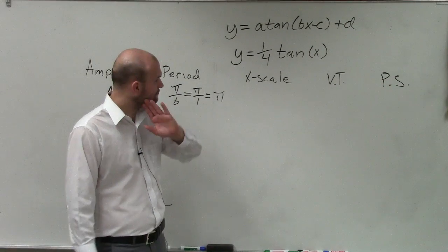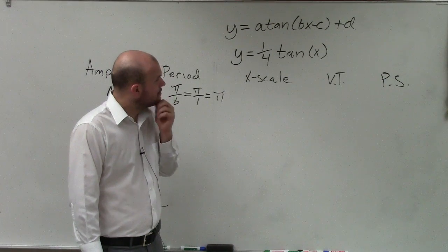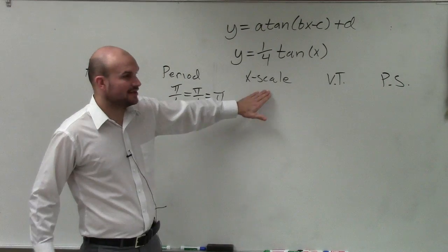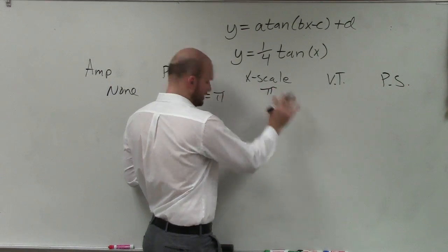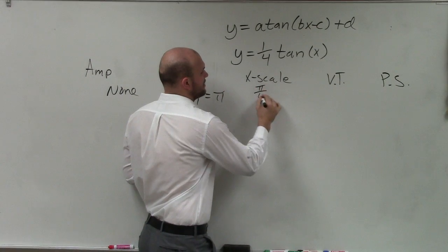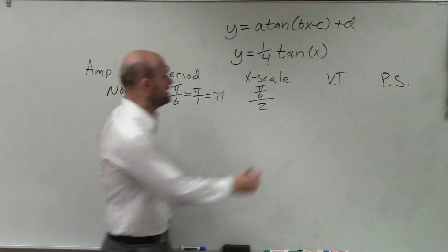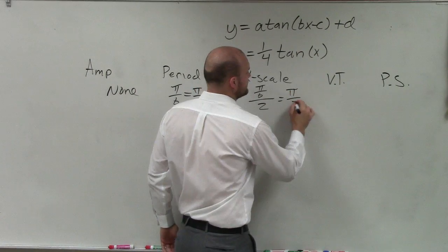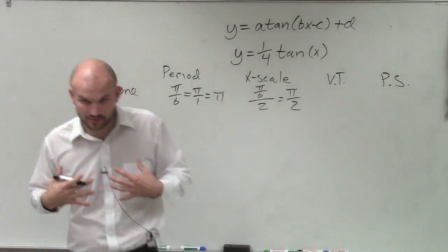My x scale. So my x scale is going to be π, or whatever my period is, π divided by b divided by 2. Well, π divided by b, which is my period, is π. So my x scale is π divided by 2. Remember, this is my personal preference on how I do this.